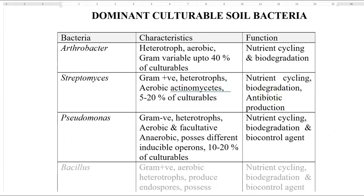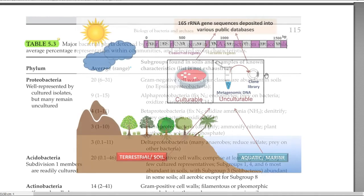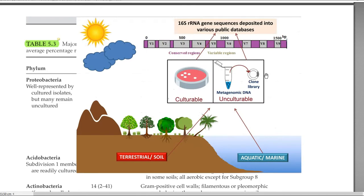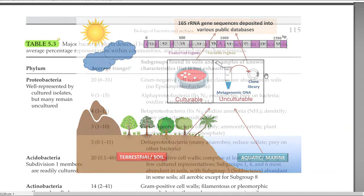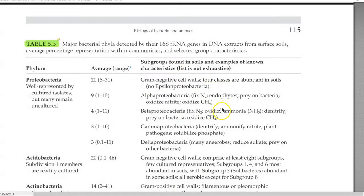Now we look at other information related to soil bacteria — specifically, what is the dominant culturable form of soil bacteria. The term 'culturable' refers to organisms that can be grown on a petri plate. Not all organisms present in the soil can be cultured, so uncultured organisms are studied mainly based on their 16S rRNA genes.